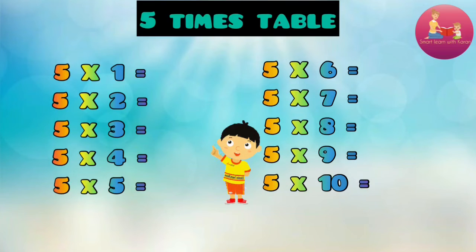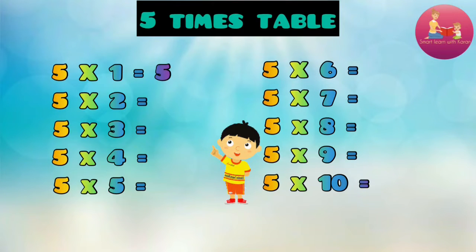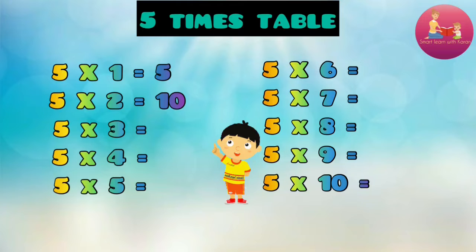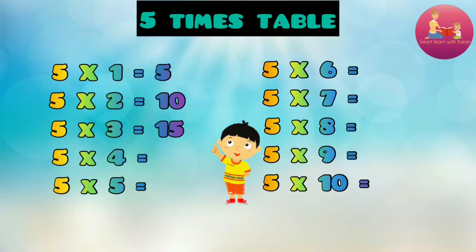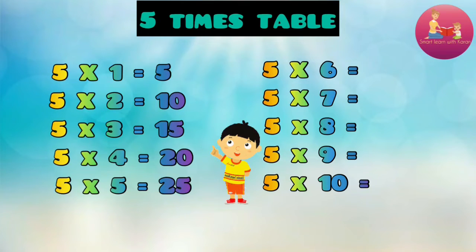5 times table. 5 into 1 equal to 5. 5 into 2 equal to 10. 5 into 3 equal to 15. 5 into 4 equal to 20. 5 into 5 equal to 25.